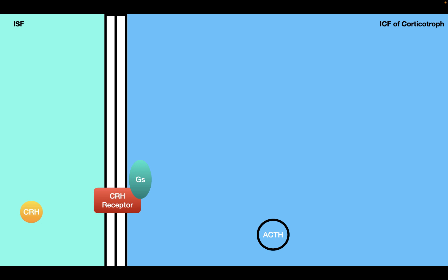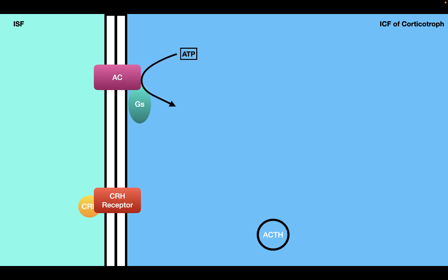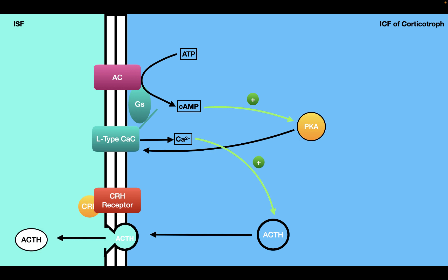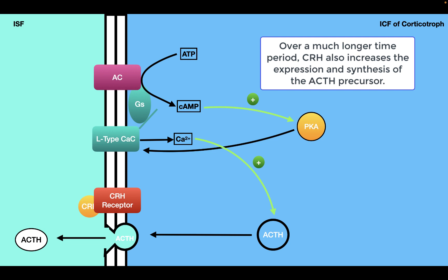When CRH binds to these receptors, it activates the GS protein, which activates adenylate cyclase. Adenylate cyclase catalyzes the conversion of ATP into cyclic AMP, and cyclic AMP activates protein kinase A. Protein kinase A then activates L-type calcium channels, allowing calcium to flow into the cell. The increase in calcium in the cytosol increases vesicular fusion, allowing ACTH to be released from the cell into the interstitial fluid and then into blood vessels.